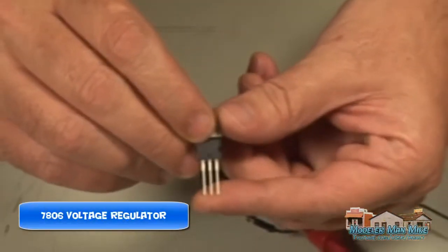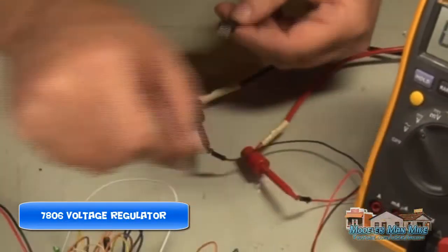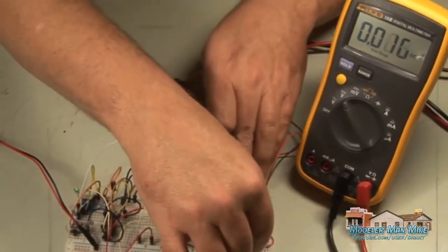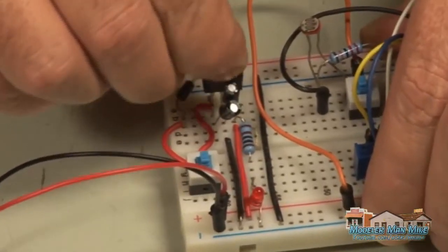And if I want to switch that out with a 7806 which is a 6 volt voltage regulator, I'll just turn the power off. Plug this 7806 in here.